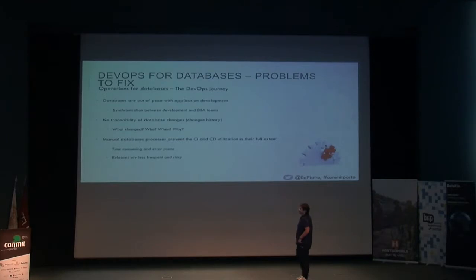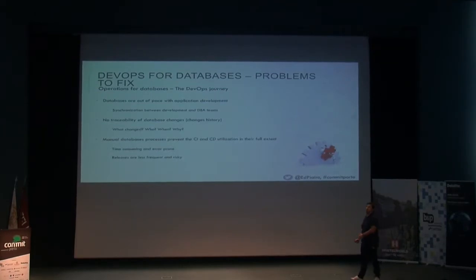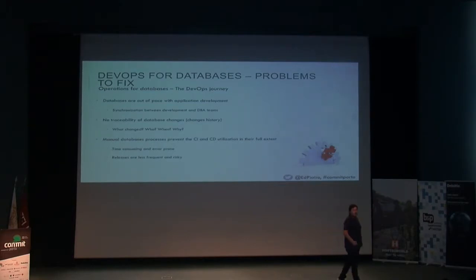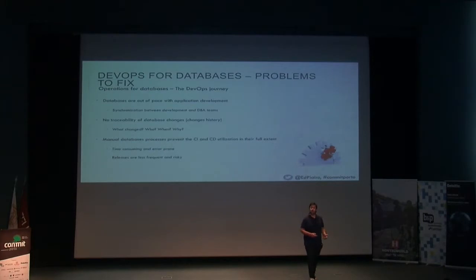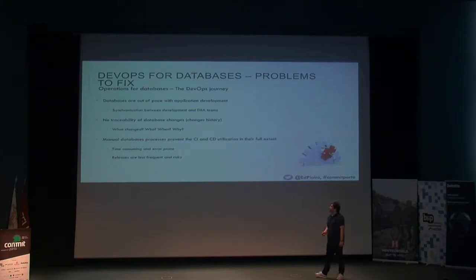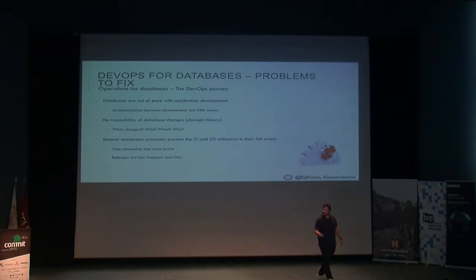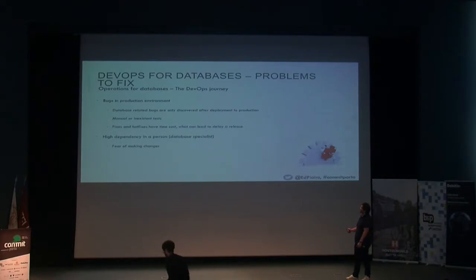So the problems we wanted to fix: communication, or synchronization between app and database. Traceability — when you have an environment or a database where everyone has owner rights and can do whatever they want, nobody knows what is happening. And manual database processes prevent you from implementing CI/CD, which brings a lot of benefit. But if you have a weak spot in your process, that weak spot will sink your process.